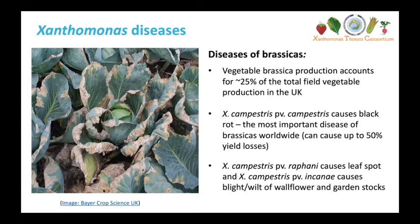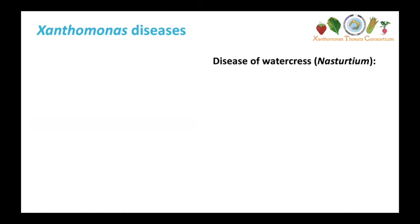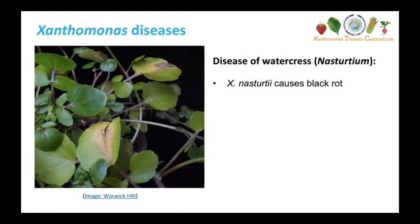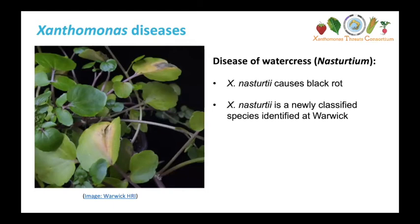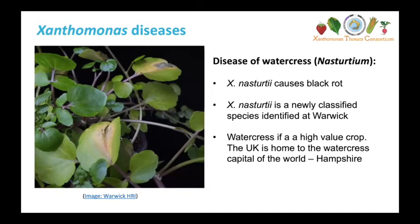These include some other pathovars of Xanthomonas campestris — as Jamie mentioned, these are raffinae and incanae, which cause disease in brassicaceous ornamentals like wallflower and garden stocks. We'll also look at Xanthomonas disease of watercress, caused by Xanthomonas nasturtii, which is a newly classified species identified at the University of Warwick. It's actually a really high-value crop in the UK — we're home to the watercress capital of the world, and we even have a railway line named after it that runs from Hampshire to London.